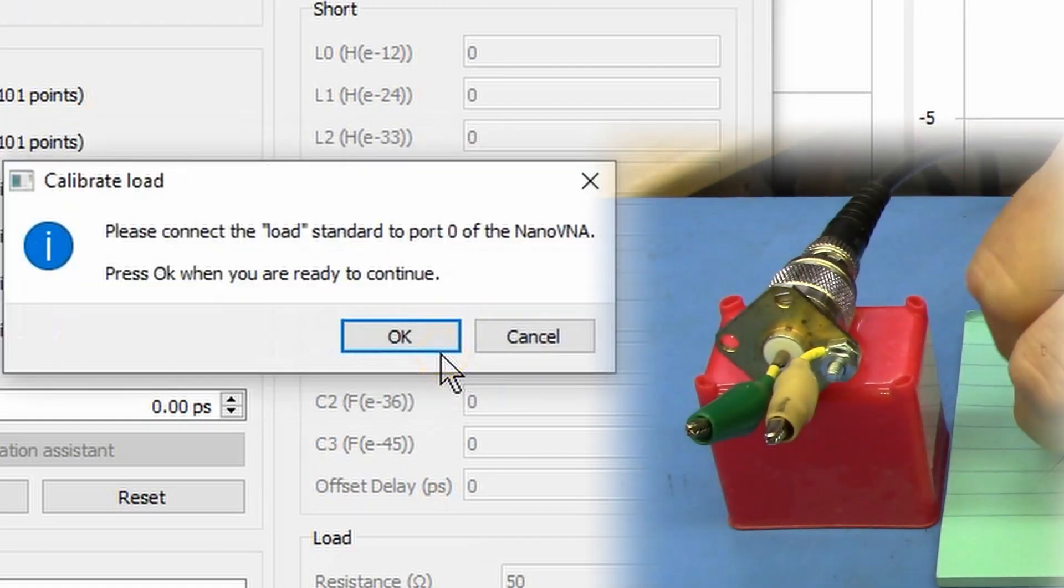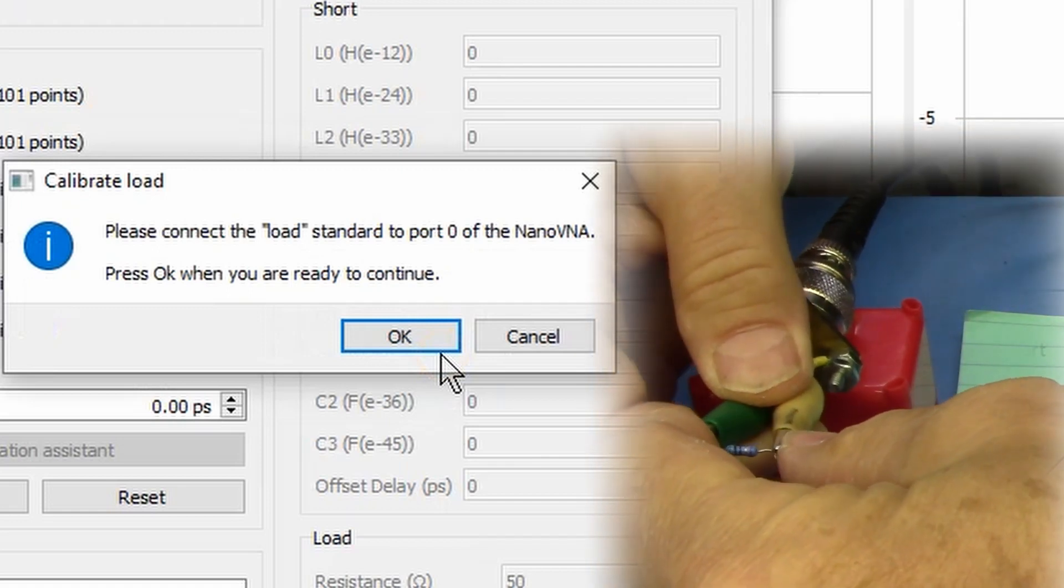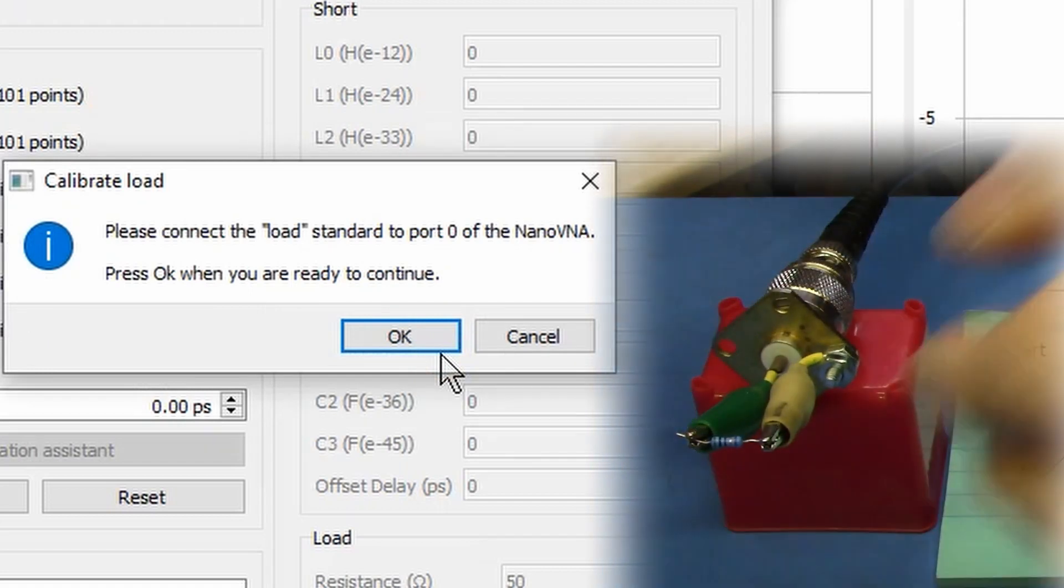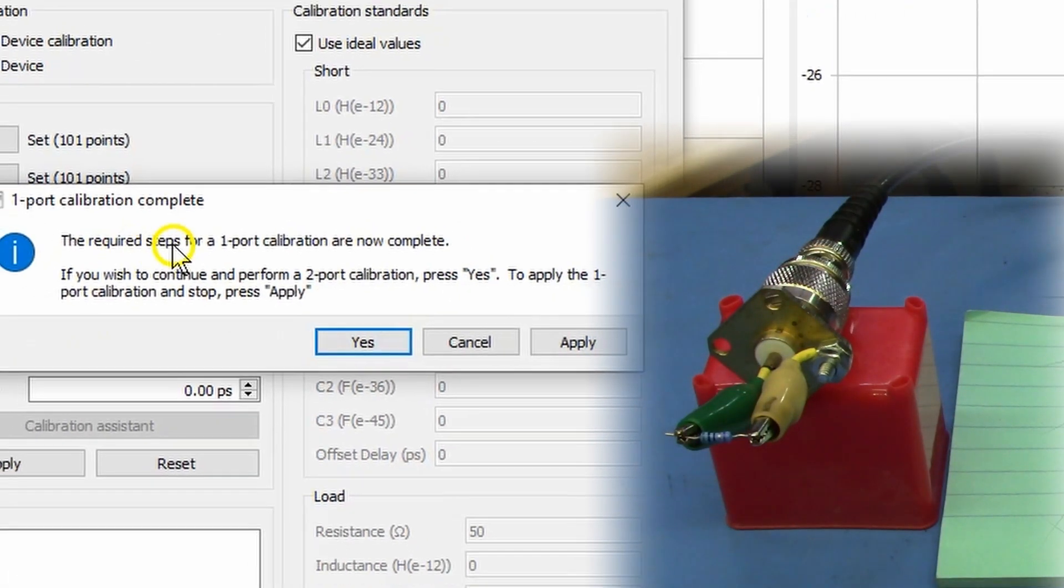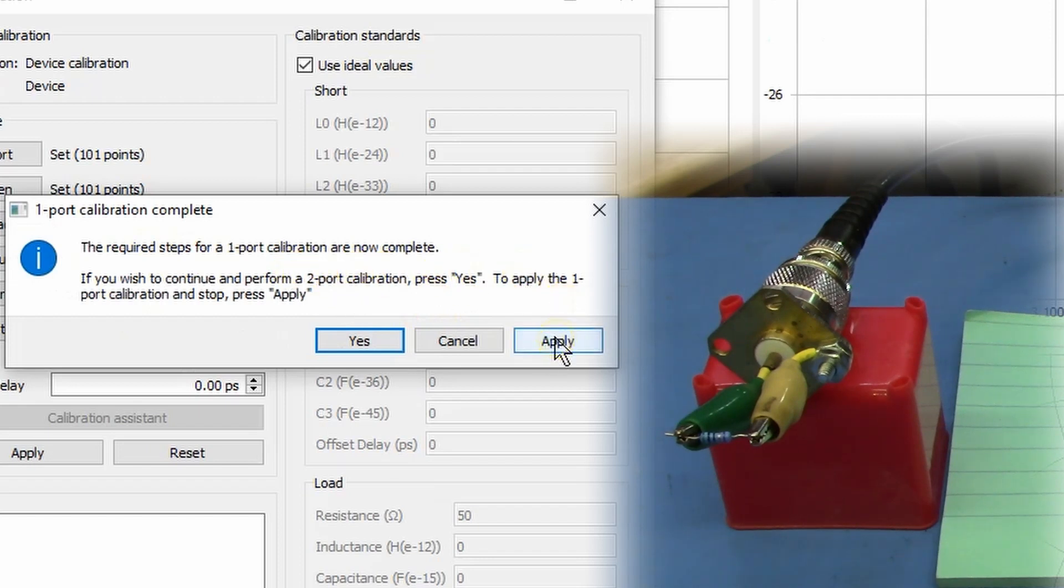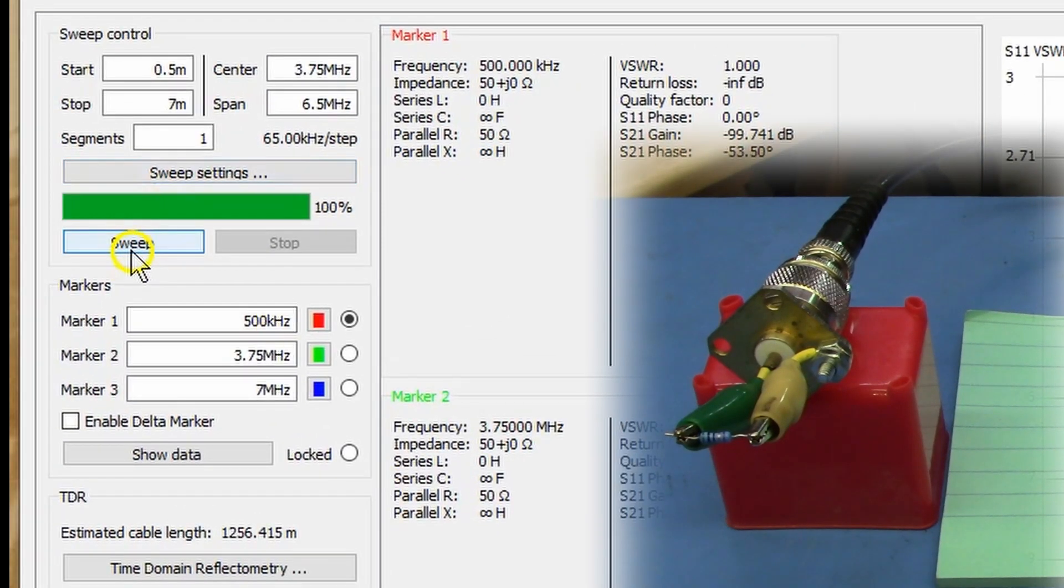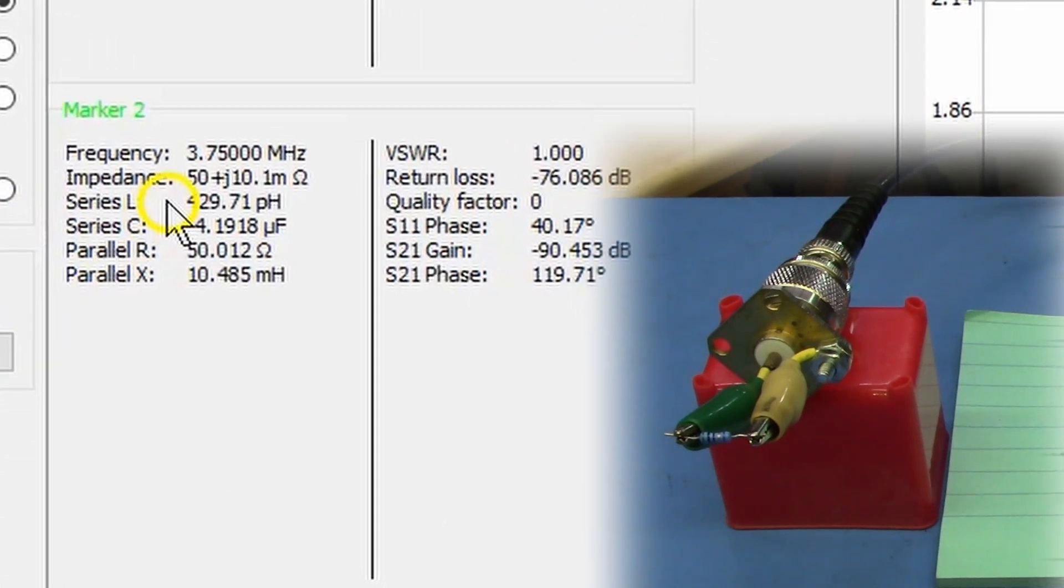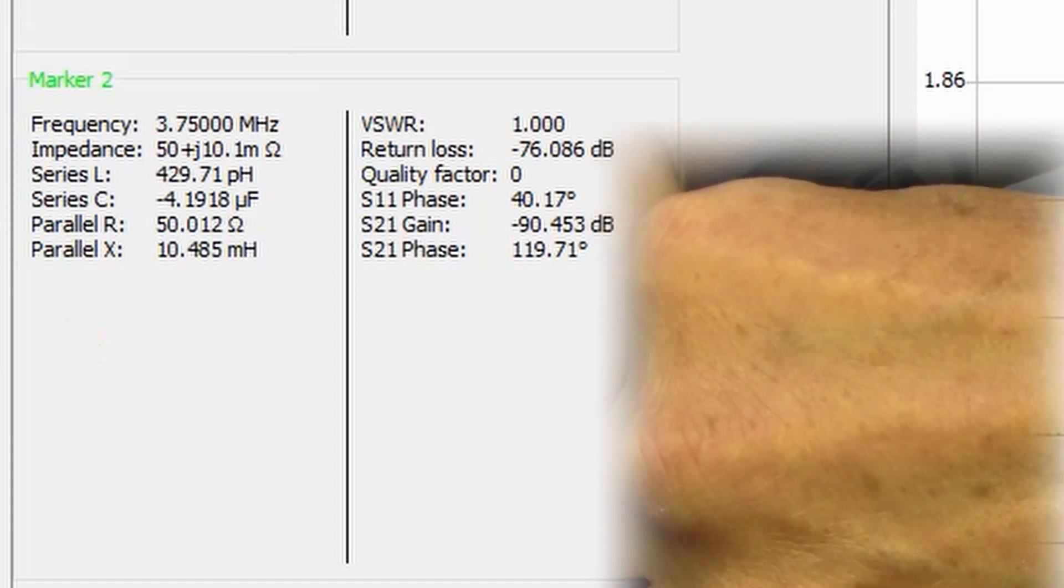And now we are going to take our precision load here. And we are going to connect that up to our clip leads. And make sure that we got a good connection there. And we don't need to do two ports, so we are just going to click on apply. And we are going to close. And so at this point if I do a sweep, I should see 50 ohms plus or minus a very small number on the J side, on the reactive side.